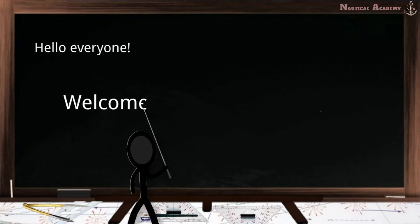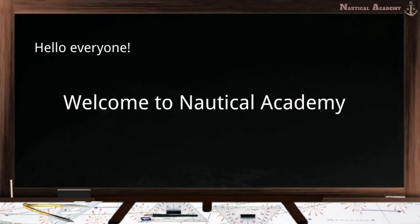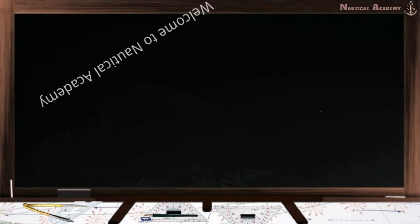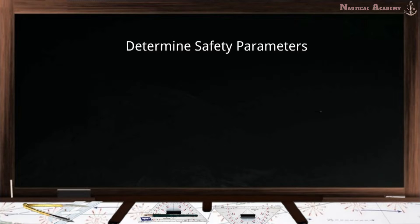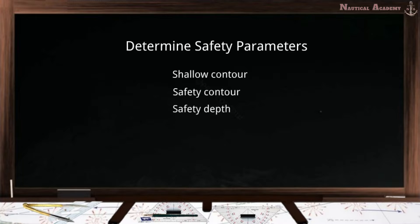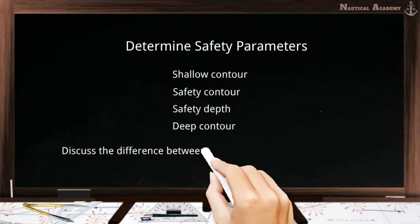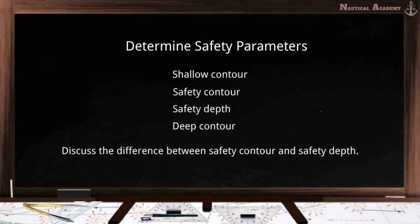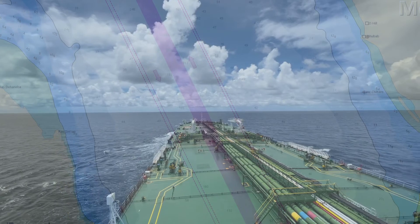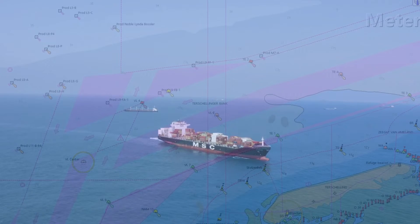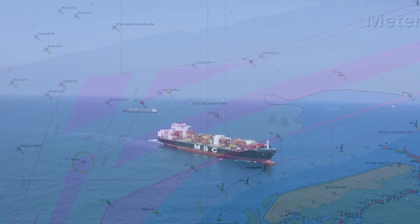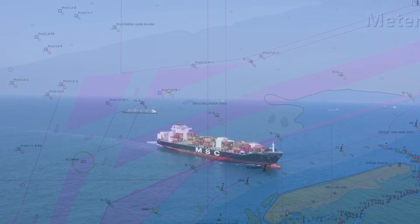Hello everyone, and welcome to Nautical Academy. In today's video, I will show you how to determine the following safety parameters: shallow contour, safety contour, safety depth, and deep contour. I will also discuss the difference between safety contour and safety depth. Knowing these safety parameters and interpreting contour lines in the nautical chart is very important for us sailors and navigators to avoid underwater obstacles and plan routes suitable for the vessel's draft. Let us start.